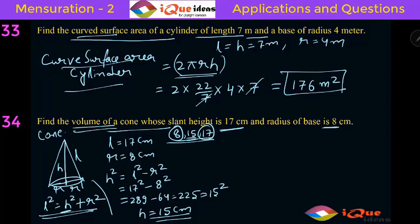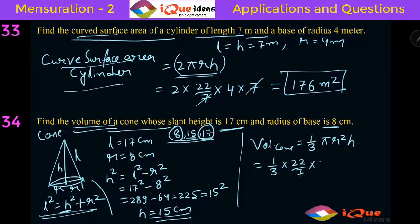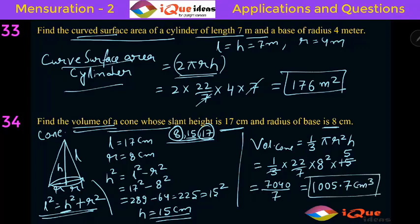Now calculate the volume of the cone using formula 1 by 3 Pi R square H. So 1 by 3 into 22 by 7 into 8 square into 15. The 3 cancels 15 giving 5, then 5 into 64 is 320, and 320 into 22 is 7040 divided by 7, which equals 1005.7 centimeter cube. If the options are in terms of Pi, the answer is 320 Pi centimeter cube; if numerical, it is 1005.7 centimeter cube.